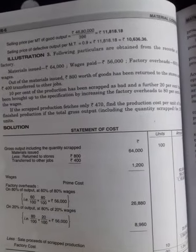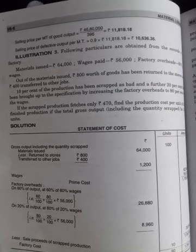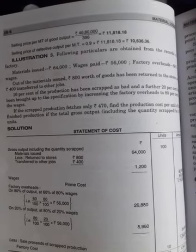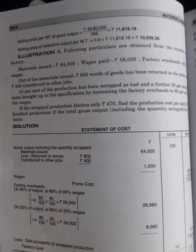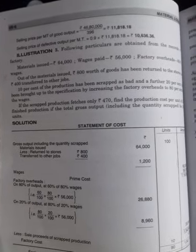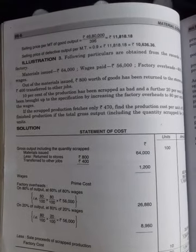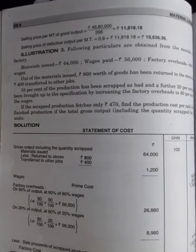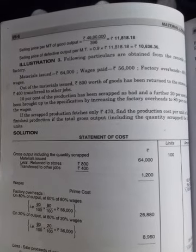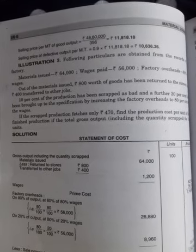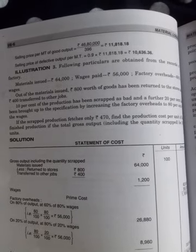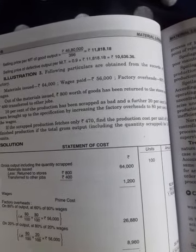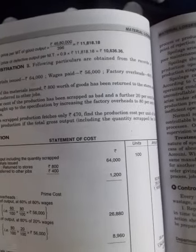Next, illustration number three. Given: material issued, wages paid, factory overheads. We need to calculate production cost per unit. Material issued is 64,000. Out of material issued, 800 worth of goods has been returned, then 400 is transferred. Total 1,200. So 64,000 minus 1,200 equals 62,800.